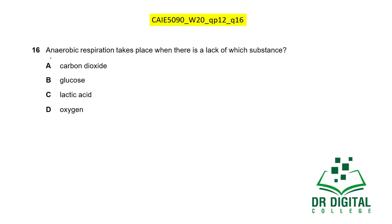In this question, anaerobic respiration takes place when there is a lack of which substance? Anaerobic respiration occurs due to oxygen deficiency. Carbon dioxide deficiency is irrelevant. Glucose deficiency would stop both aerobic and anaerobic respiration. Lactic acid is a product of anaerobic respiration, not a trigger. Only D is correct: deficiency of oxygen causes anaerobic respiration to begin.